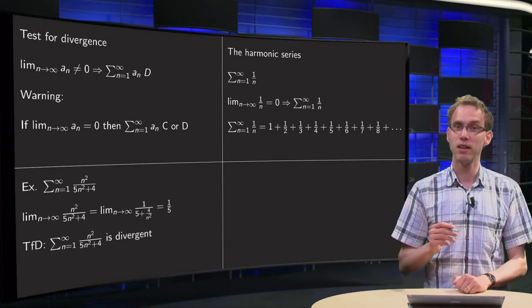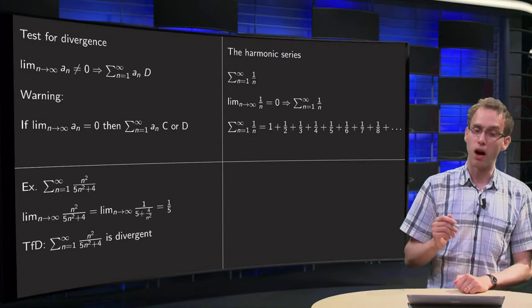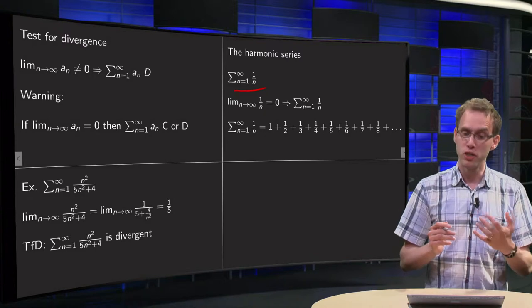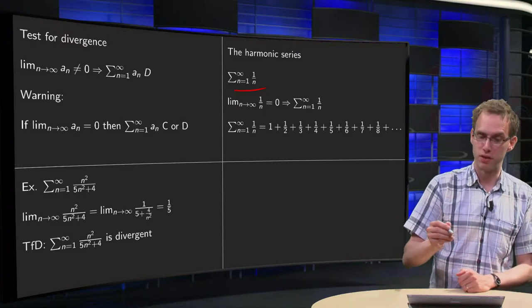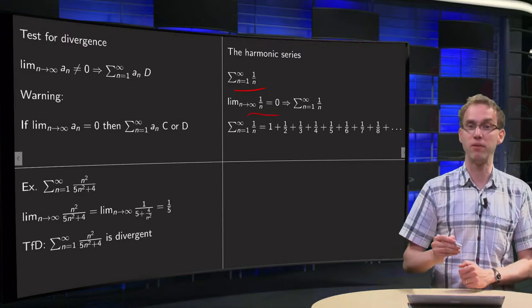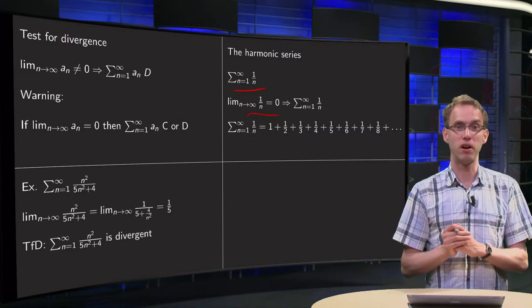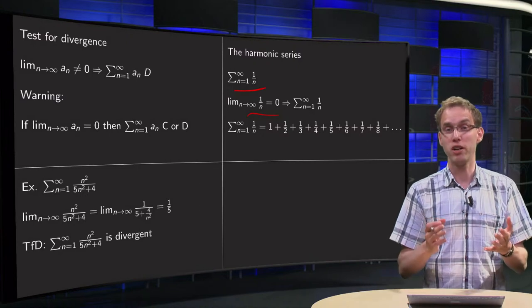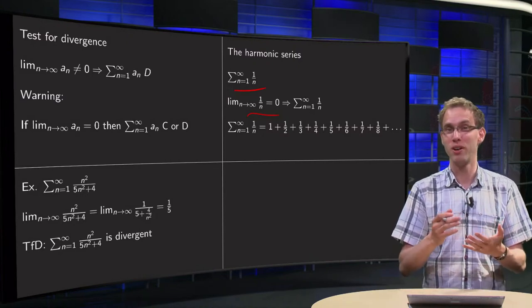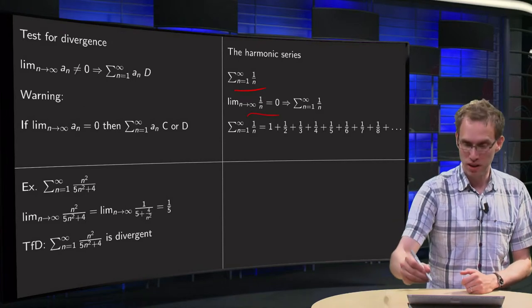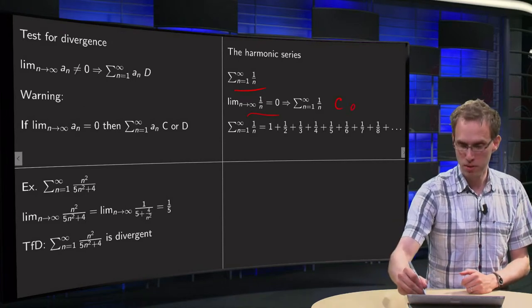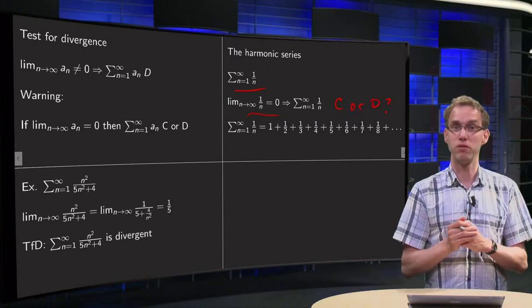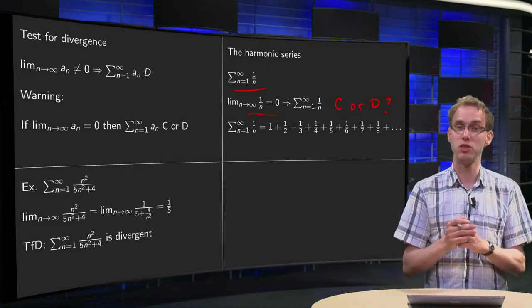Now we are going to look at the harmonic series, which is the sum n from 1 to infinity 1 over n. We see that if we take the limit n to infinity of 1 over n, we get zero. So what can we conclude about the harmonic series? Well, terms go to zero, so you would expect it to converge or not. Well, the test for divergence actually says it can be convergent or divergent, inconclusive up to this point. The test for divergence doesn't tell us.